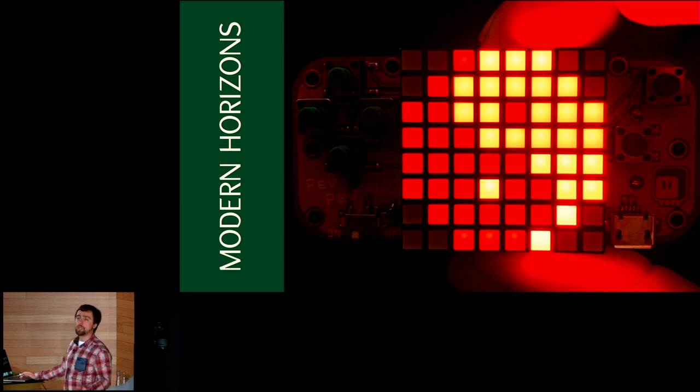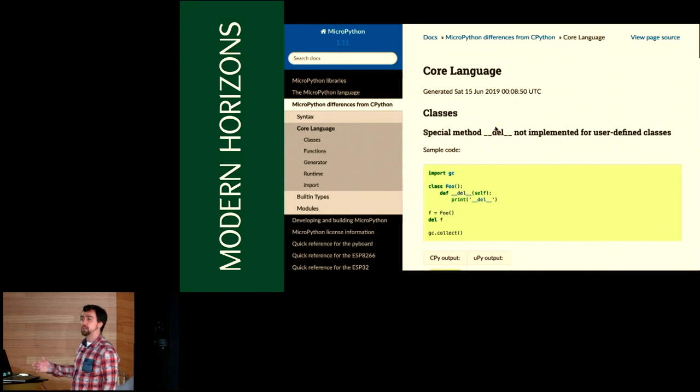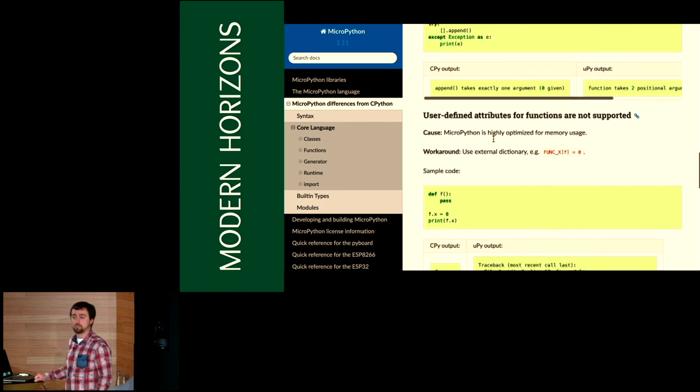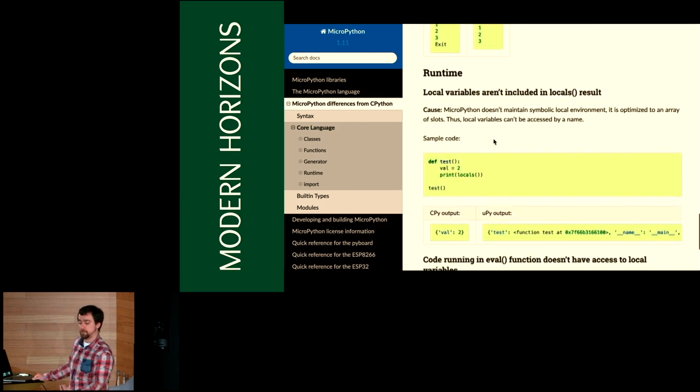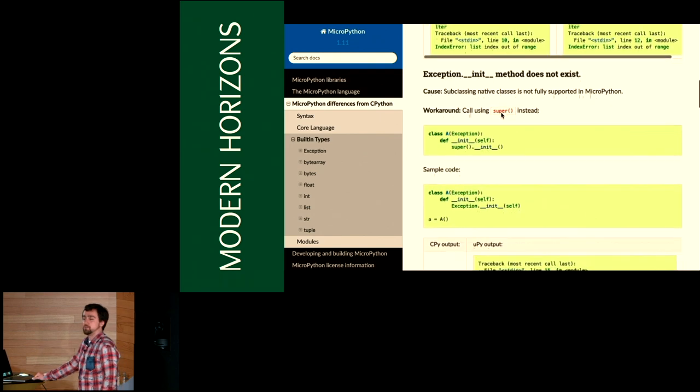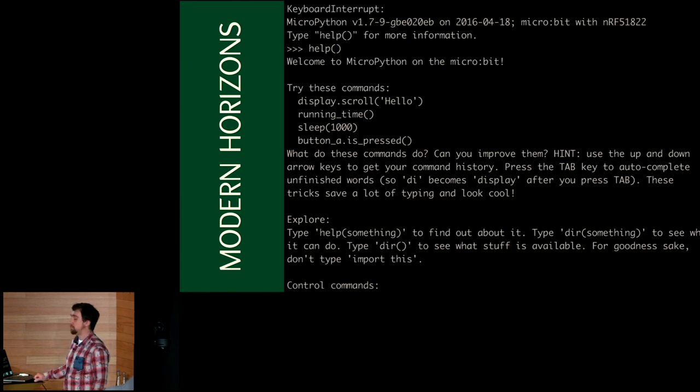But more interestingly, MicroPython has a list of things that it decides not to implement or implement differently. Some of them are just restrictions of what you can do when faced with a very tight programming environment. But some of them are just decided because of either developer efficiency or because they just fit the user better. Amazingly, MicroPython is still an interpreter.